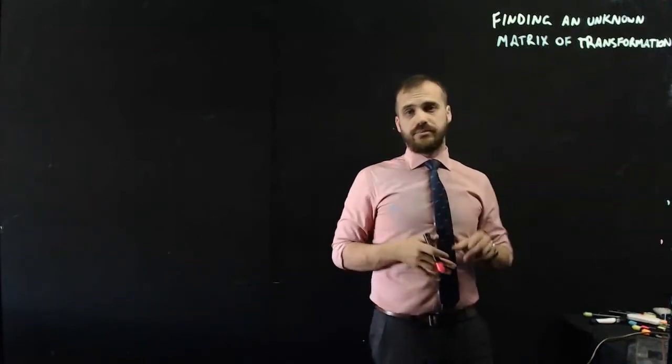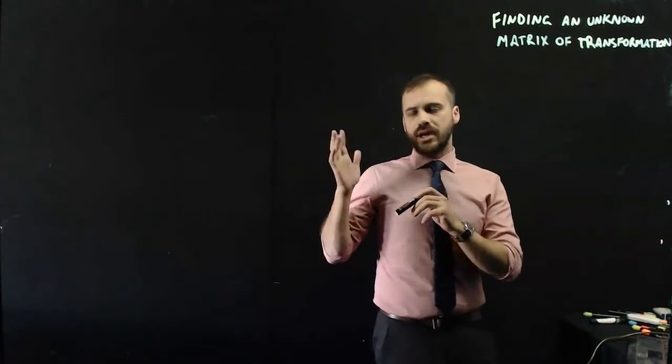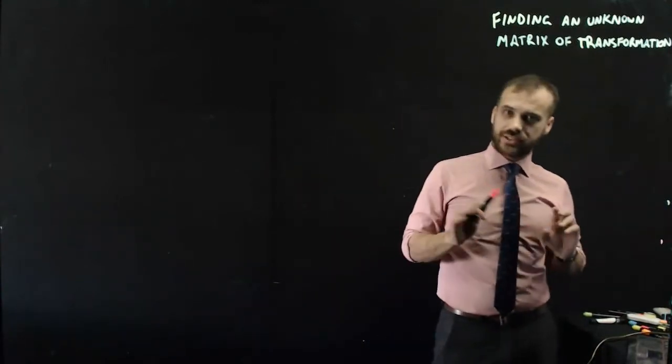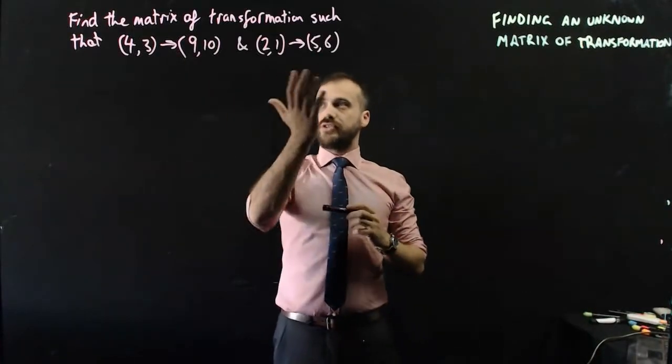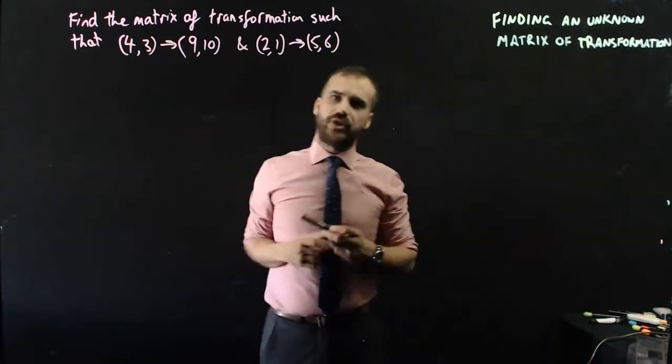In this video, we're going to be finding an unknown matrix of transformation. I'm going to give you an object, I'm going to give you an image, and then you should be able to tell me what the matrix of transformation is. Let's get stuck straight into it. Here is our question: Find the matrix of transformation such that (4,3) maps onto (9,10) and (2,1) maps onto (5,6).